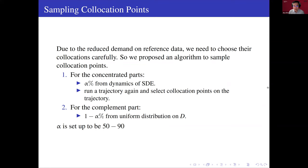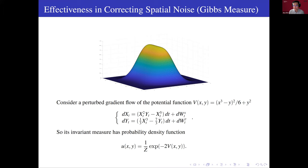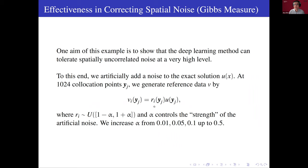The other advantage of the physics-informed method is denoising. To test the strength of denoising, we use the following example. For this gradient system, we of course know the invariant measure is the Gibbs measure. And the density function is known like this. And we artificially add noise to the exact solution by multiplying a random variable R to the exact solution at these collocation points. And these random variables follow the uniform distribution between 1 minus alpha and 1 plus alpha, where this alpha controls the strength of the noise. And then we raise this alpha from 0.01 up to 0.5.